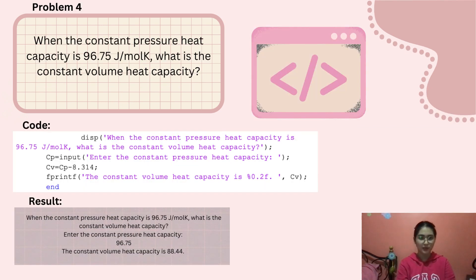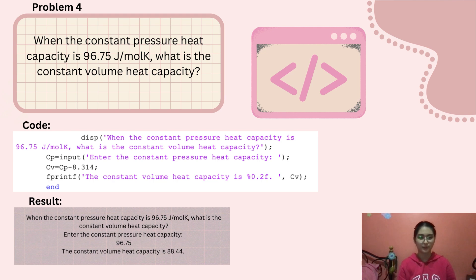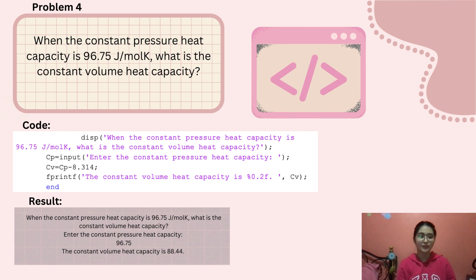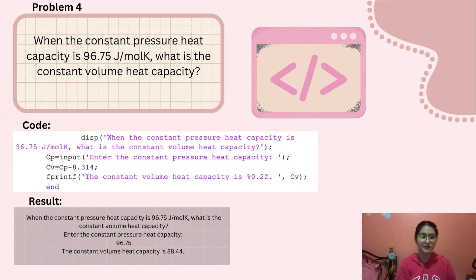For the last problem of Thermodynamics: when the constant pressure heat capacity is 96.75 joules per mole Kelvin, what is the constant volume heat capacity? You enter the constant pressure heat capacity, which is 96.75.